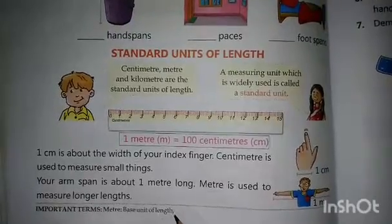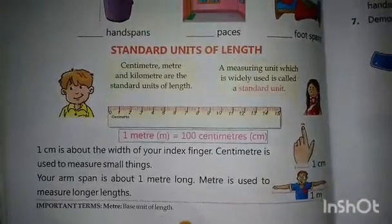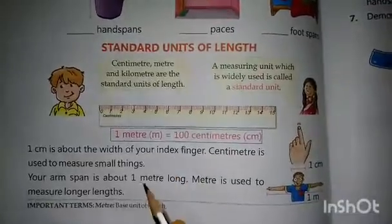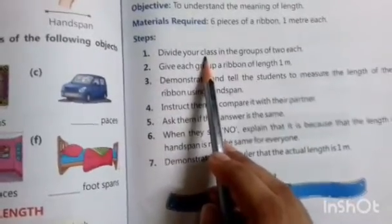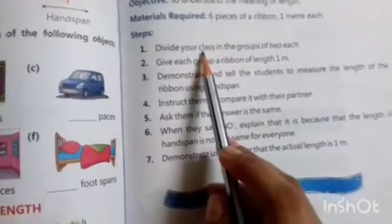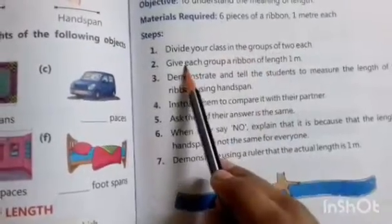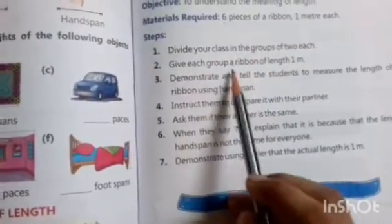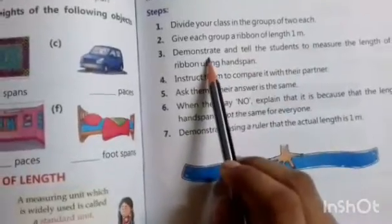Meter is the base unit of length — not weight or height. Now divide your class into groups of two. Give each group a ribbon of length 1 meter and demonstrate the activity.